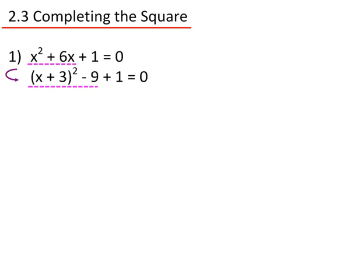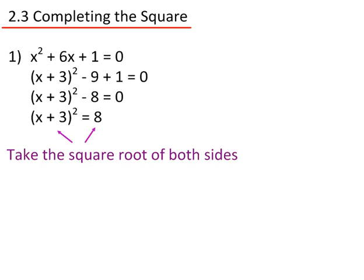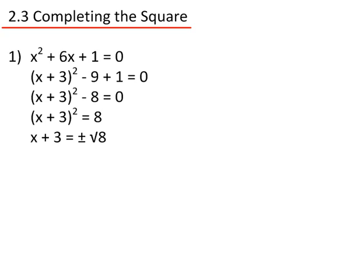Minus 9 plus 1 gives me minus 8. Adding it to both sides gives x plus 3 all squared equals 8. Now I need to take the square roots of both sides. Because this is squared, it just becomes x plus 3. So x plus 3 equals plus or minus the square root of 8.